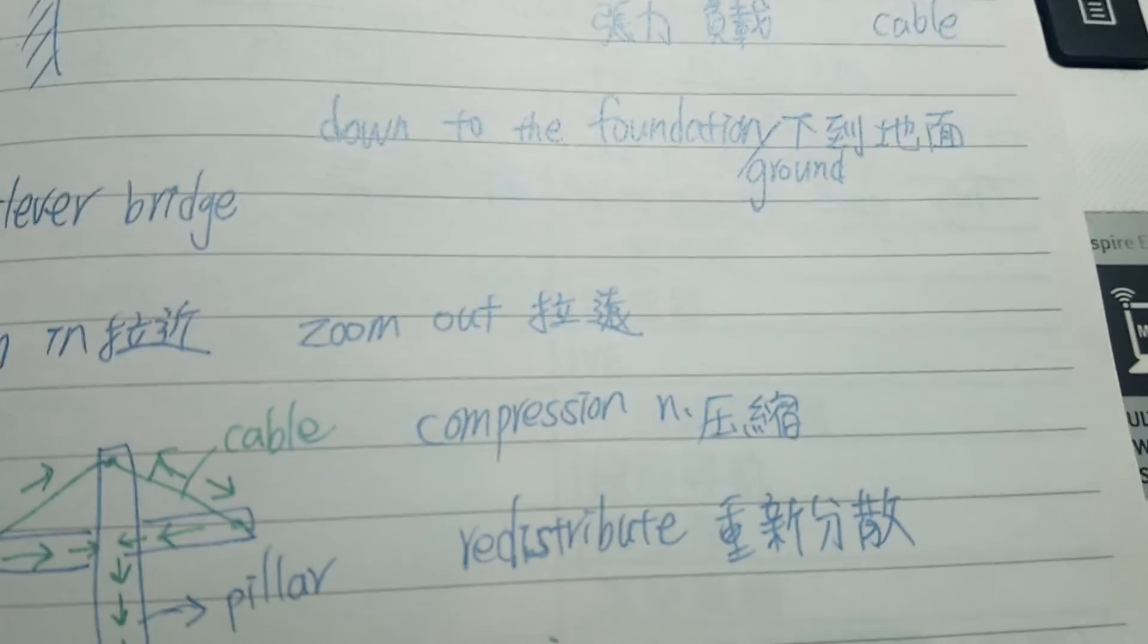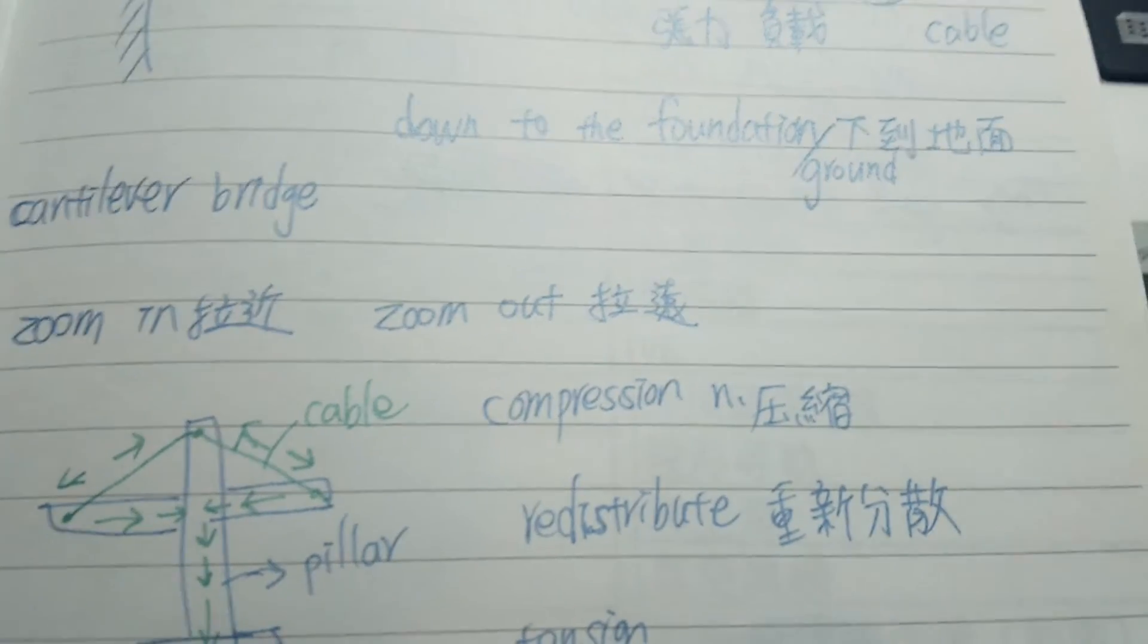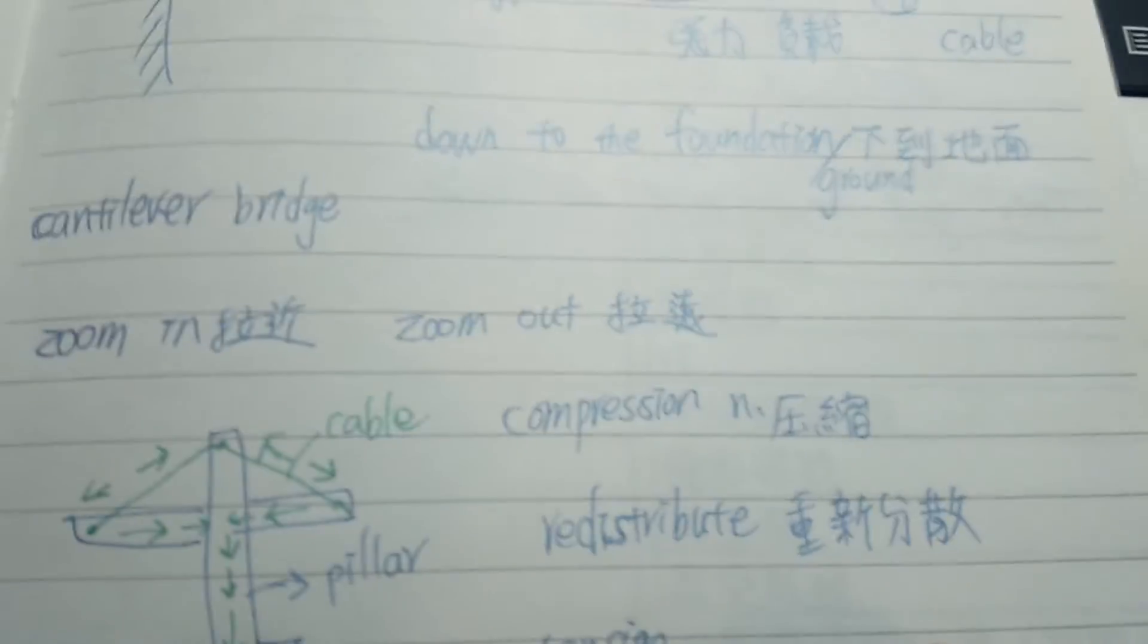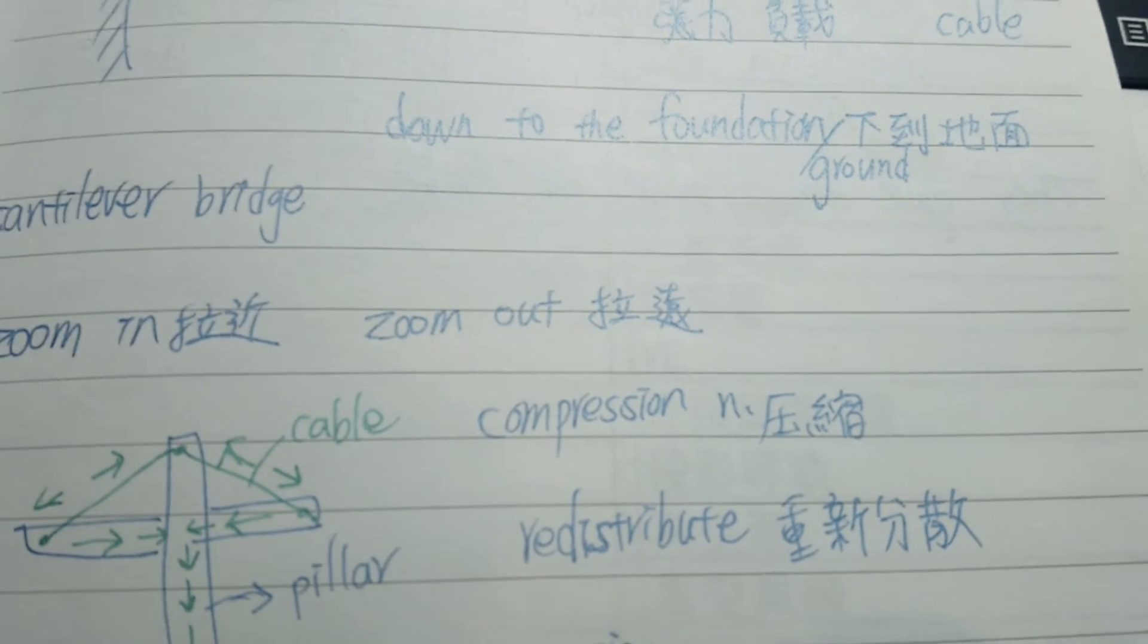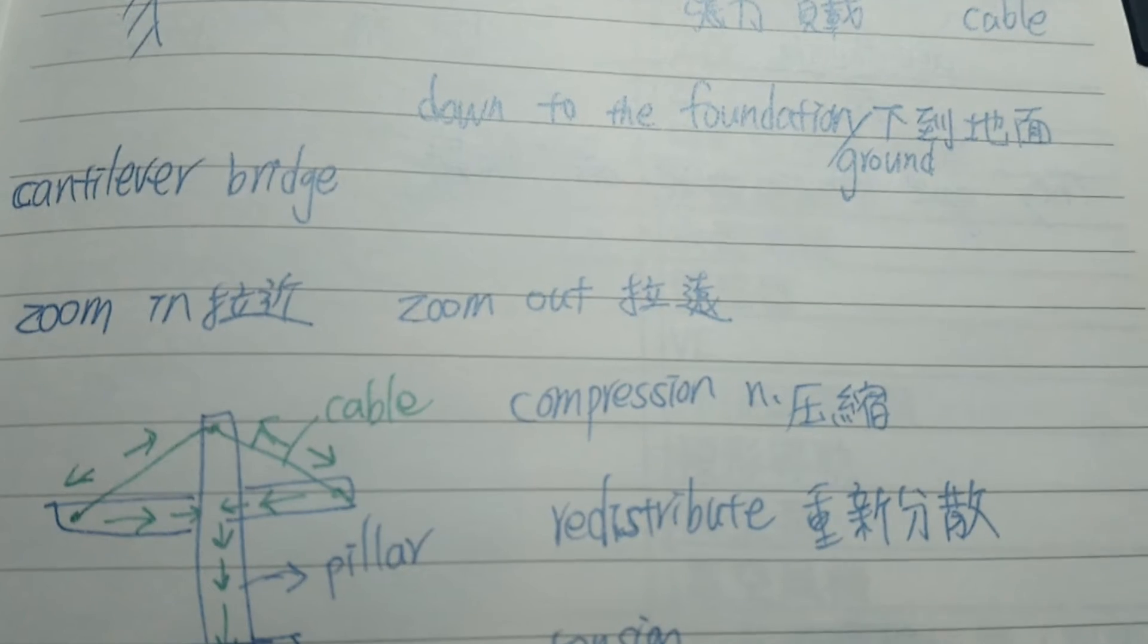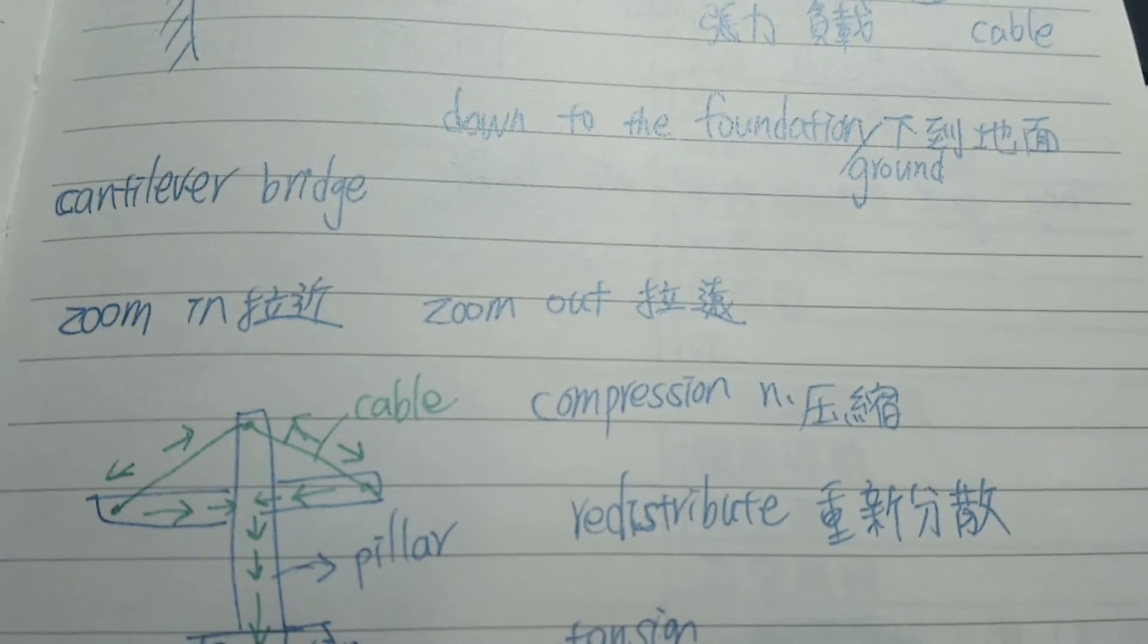And then we have a pillar. 好,接下來我們有個柱子. That is strong in compression. 它在壓縮力上面很強. And then we take cantilever beams. 接著我們就是有個懸臂梁. And we put them on both sides of the beam. 好,我們接下來兩邊都有這個懸臂. 兩邊都有這個橫梁.